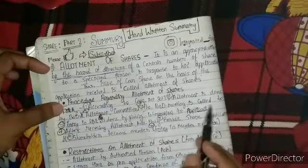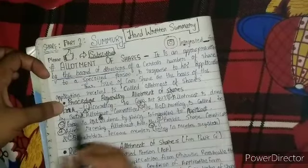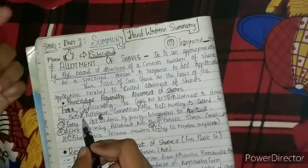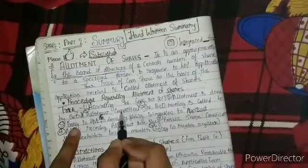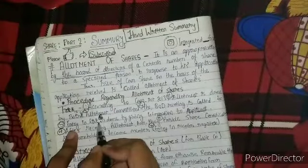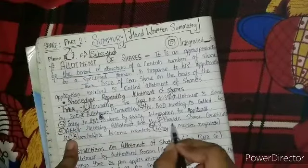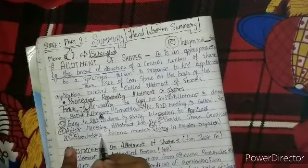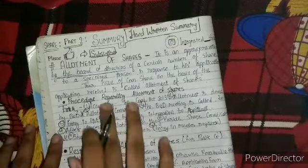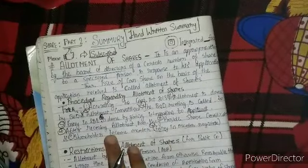Let's remember the procedure. According to the Companies Act 2013, allotment is done by the board of directors. A board of directors meeting is called, an entry in the list is made, and information is given to the applicant. After receiving the allotment amount, they provide the share certificate and the shareholder becomes a member. This is the procedure regarding the allotment of share — covering its meaning and procedure, summarized in 9 to 10 key points.